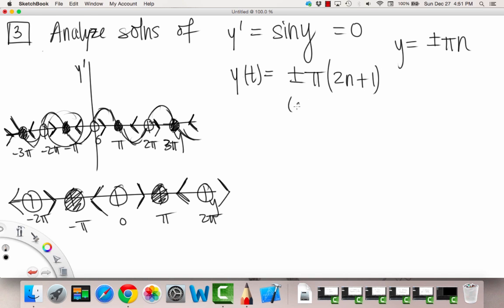So basically, I'll just write in parentheses, this is an odd number. Remember, when it's an odd number times pi, it doesn't matter, positive or negative, then we have an asymptotically stable equilibrium point. Asymptotically stable equilibrium point.